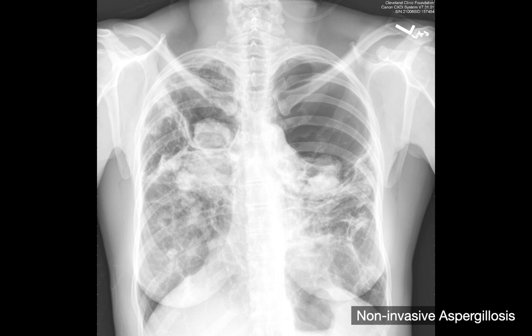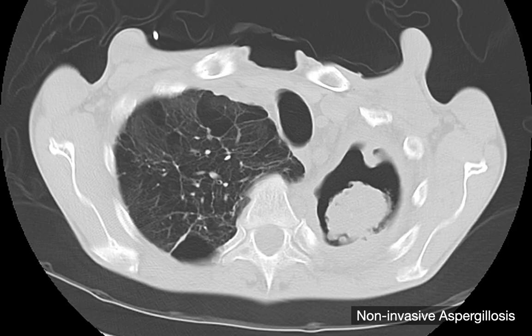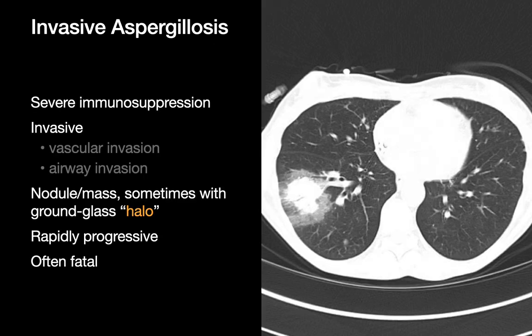When we see a mass like this sitting within a cavity, this goes by the term Monod sign in some literature. Invasive aspergillus is a different morphology of aspergillus infection that happens in folks who are very immunosuppressed. In this case, we're not talking about fungus setting up shop within a cavity, but just fungus growing de novo within previously normal parenchyma and not being controlled because the immune system is too weak — the fungus can grow quite aggressively, invading and disregarding vascular margins, airway margins, hence the term invasive.